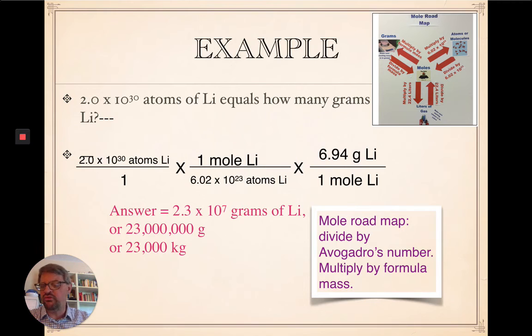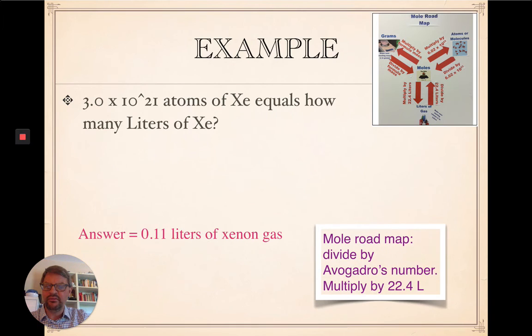And your answer comes out to 2.3 times 10 to the 7th grams of lithium, which is 23 million grams, or roughly 23,000 kilograms, which is roughly about 10 tons. It's a lot of lithium.